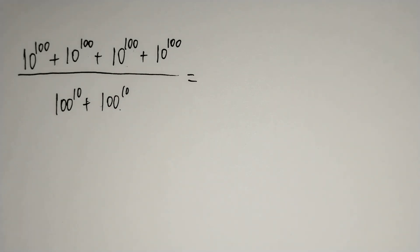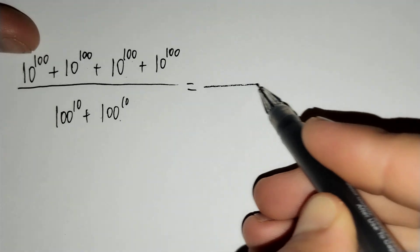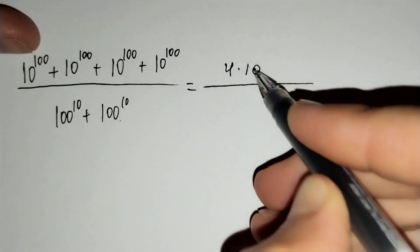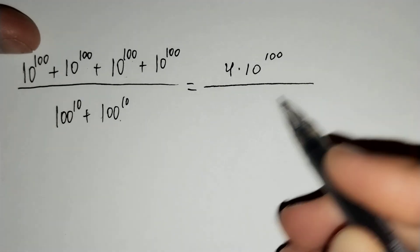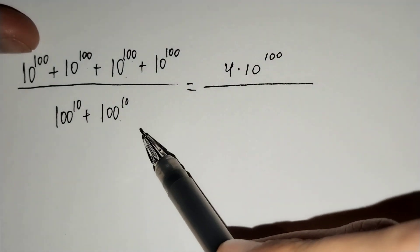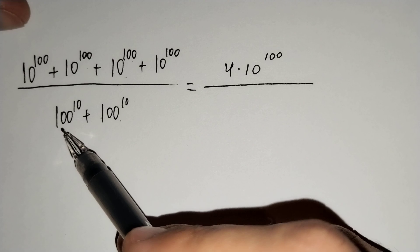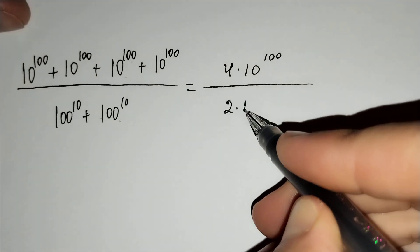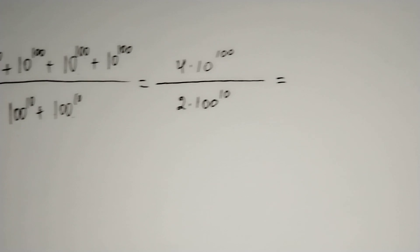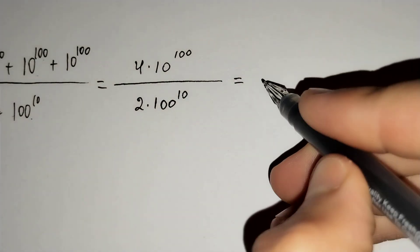How should we solve this problem? Firstly, at the numerator of our fraction we have 4 times 10 power 100, and at the denominator we have 2 times 100 power 10. This equals 4 over 2, which equals 2. So we get 2 times 10 power 100 over 100 power 10.